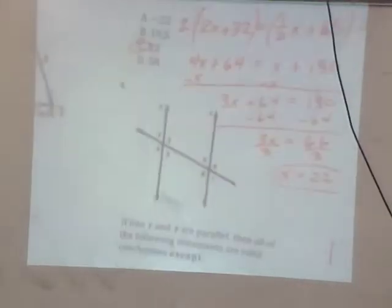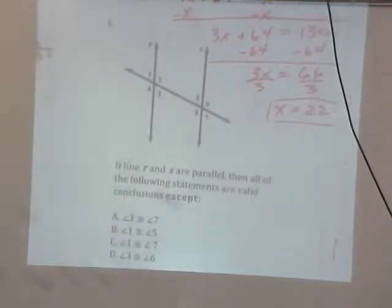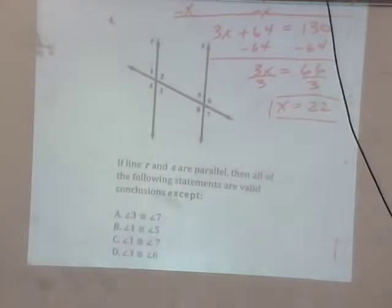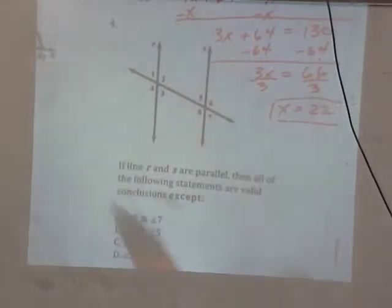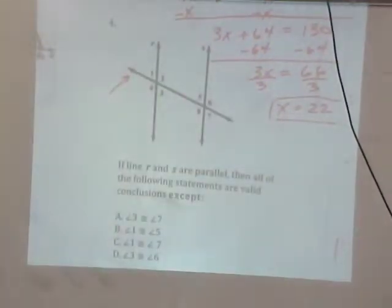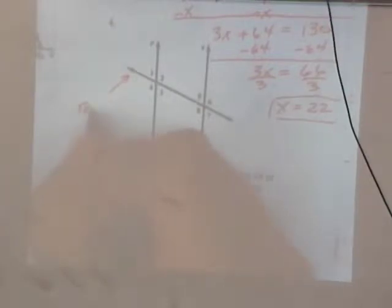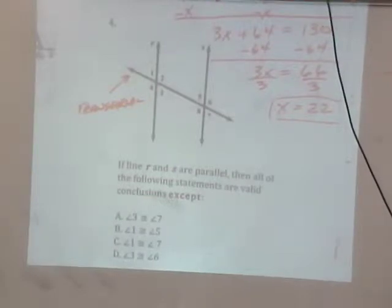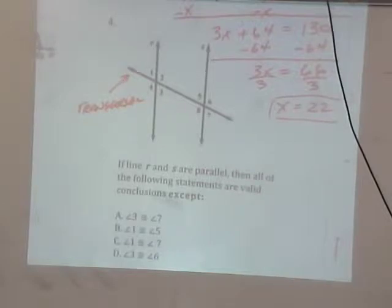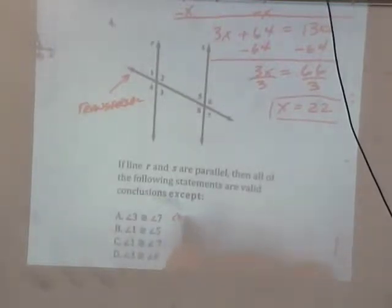Number 4. Lines R and S are parallel. Then all the following statements are valid conclusions except. So it gives us R and S parallel. What's the name of this line here? Transversal. Transversal. Very good. Is 3 congruent to 7? No. Why not? What do we call those two angles? 3 and 7. Corresponding. You said it earlier. Corresponding. Corresponding, right? Corresponding angles are congruent. So that's true.